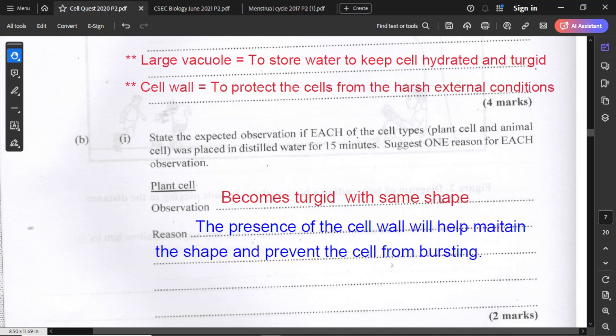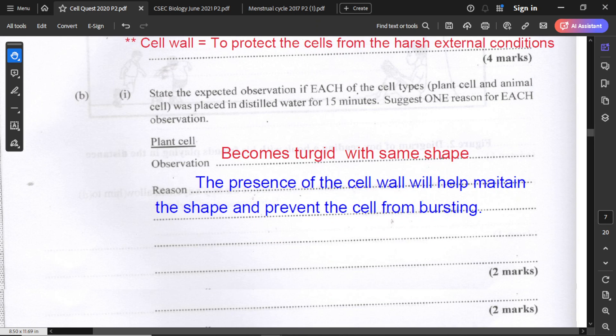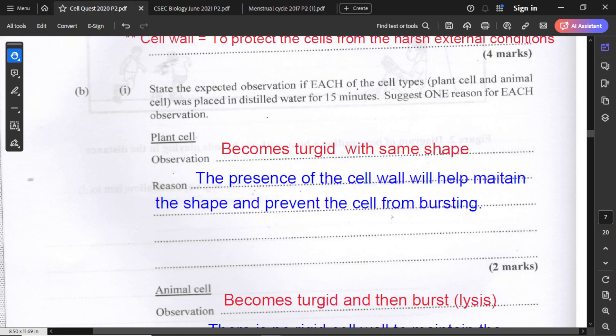For part B, the expected observation if each of the cell types, plant and animal cell, was placed in distilled water for 15 minutes. For the plant cell, it will definitely become turgid, but the shape will be the same. It will maintain its shape.